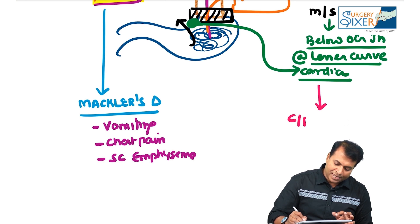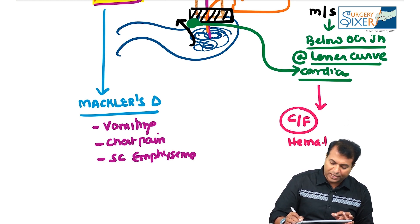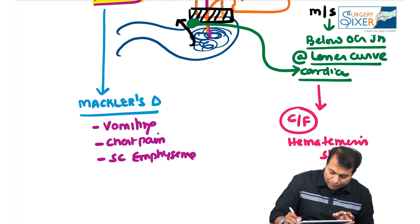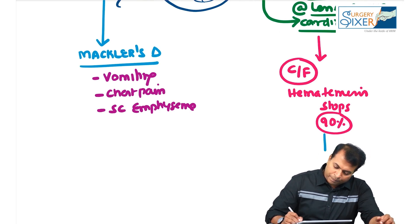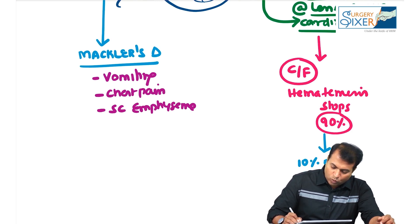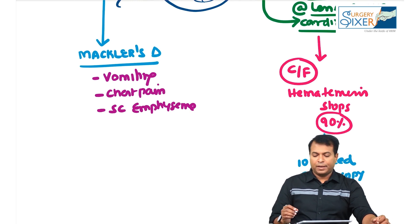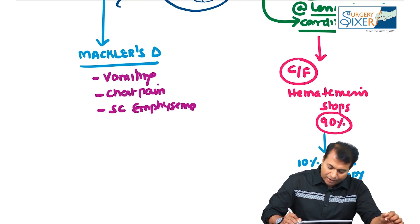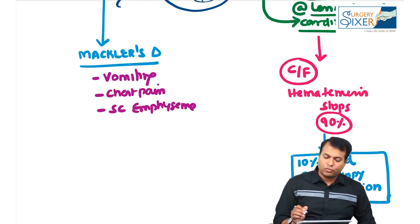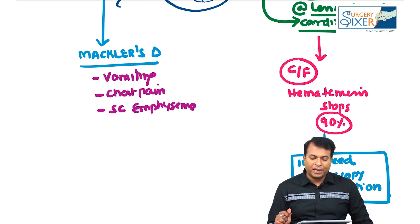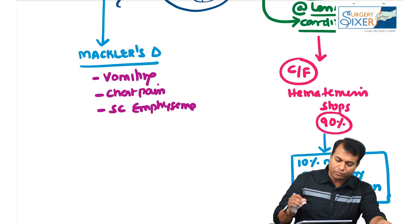Somo is only characterized by hematemesis, and 90% of the time this hematemesis stops by itself — the bleeding stops. Therefore, only 10% of them will need intervention by endoscopy; endoscopic coagulation is done for those 10% of patients. Please don't forget: 90% stop by themselves, only 10% need endoscopic coagulation — a very important point for the exam.